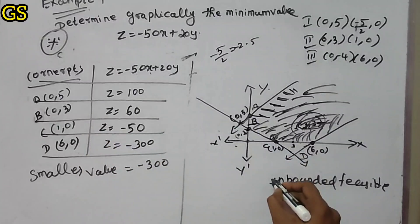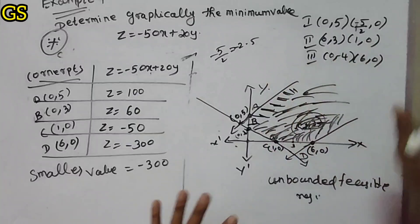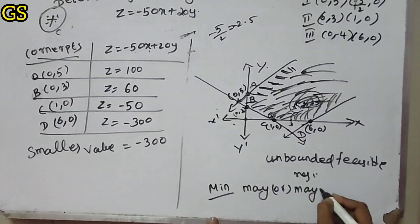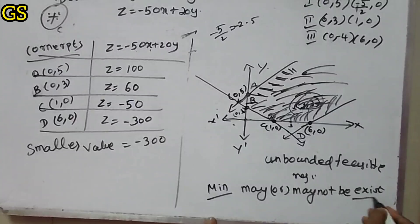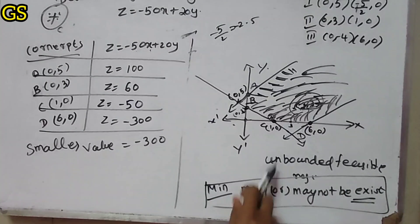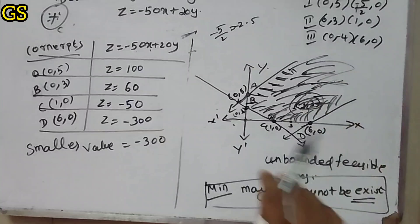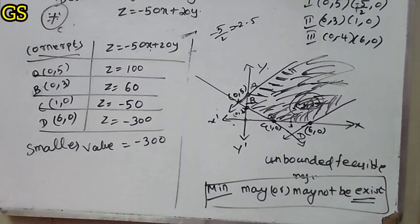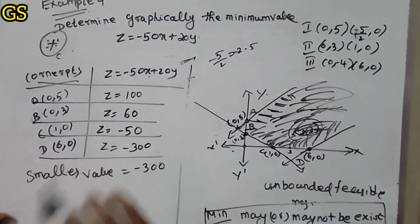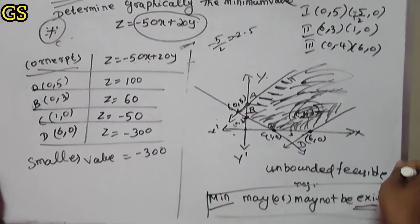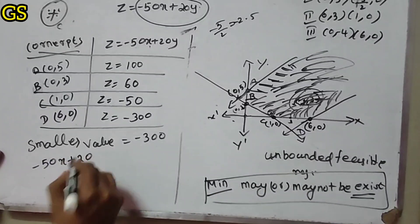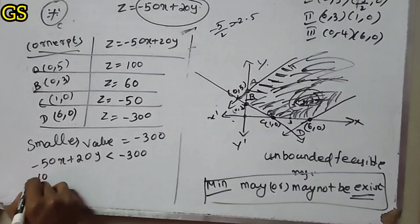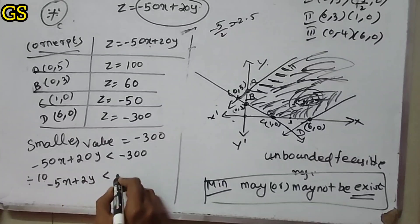Since the region is unbounded, the minimum value may or may not exist. To verify, we draw a dotted line using the inequality minus 5x plus 20y less than minus 300. We need to check whether this dotted line intersects the feasible region or not.